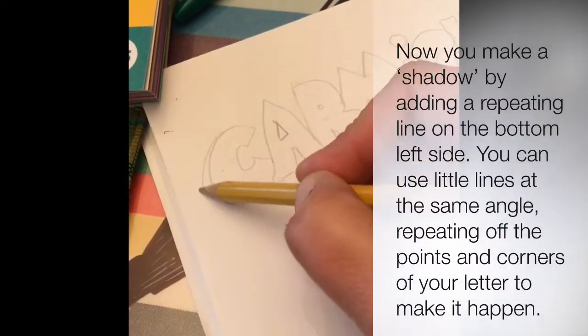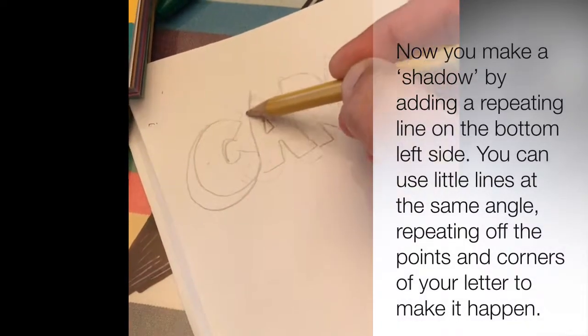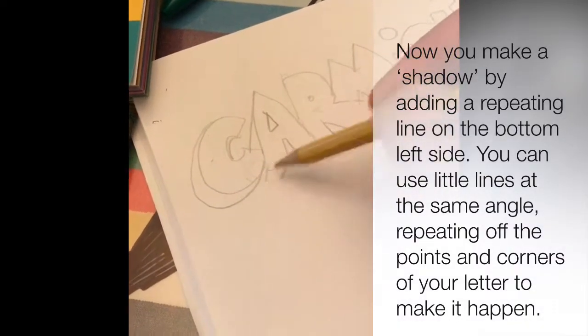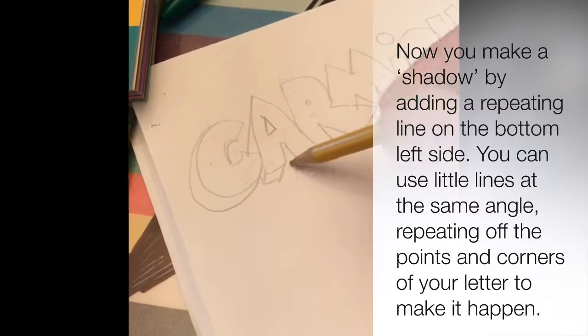Here I've erased the inside letter and now it looks like it's all one letter and then you see I'm adding shadow.